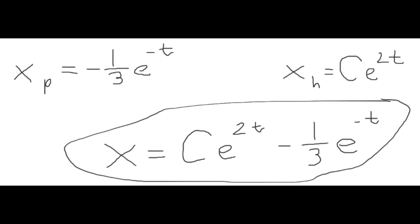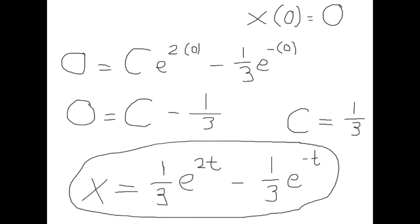Now that I had the two parts of the solution, all I had to do was add them together to get the general solution for x. Then I solved for x of 0 equals 0 by plugging 0 in, and that left me with the constant c equaling one-third, which led me to conclude that x equals one-third e to the power of 2t minus one-third e to the power of negative t.